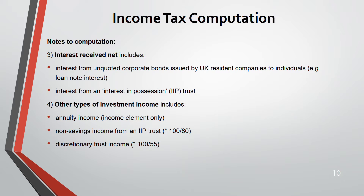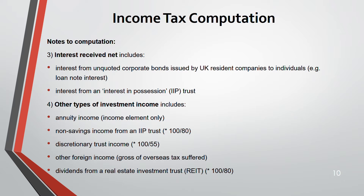Discretionary trust income is also net, but 45% tax was deducted (the additional rate), so you gross it up by 100/55. Other investment income (Note 4) includes annuity income (income element only), non-savings income from IIP trusts (net, gross up by 100/80), and dividends from Real Estate Investment Trusts (REITs), also received net at 100/80.